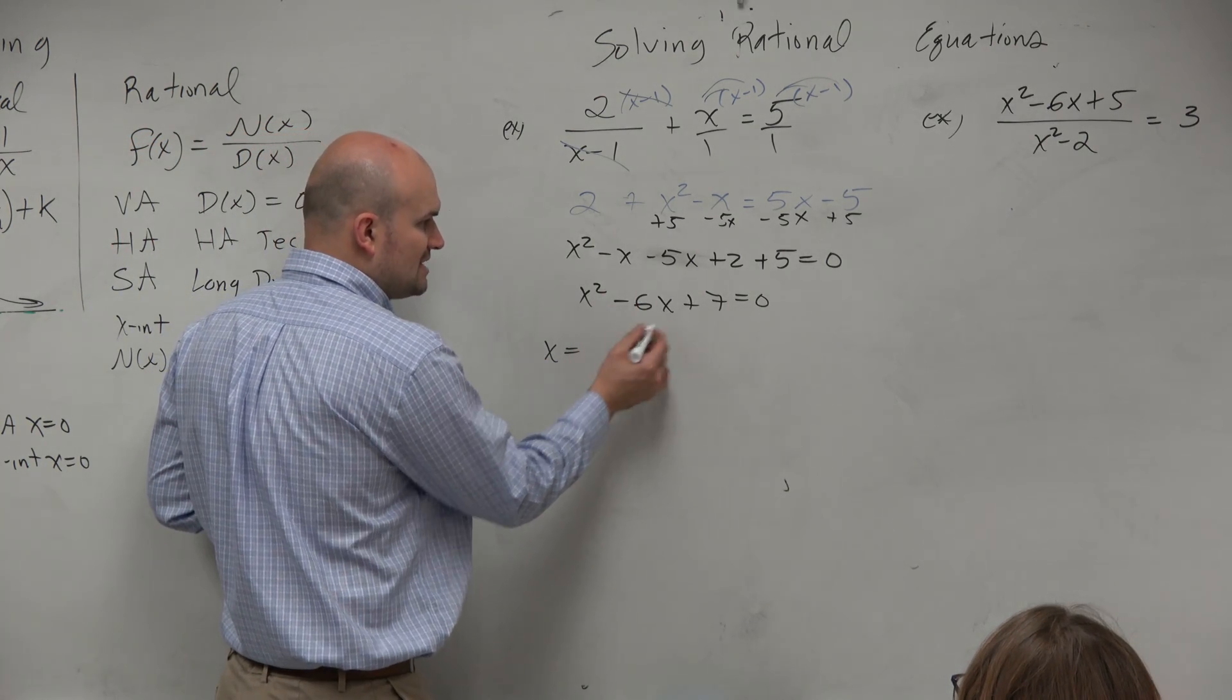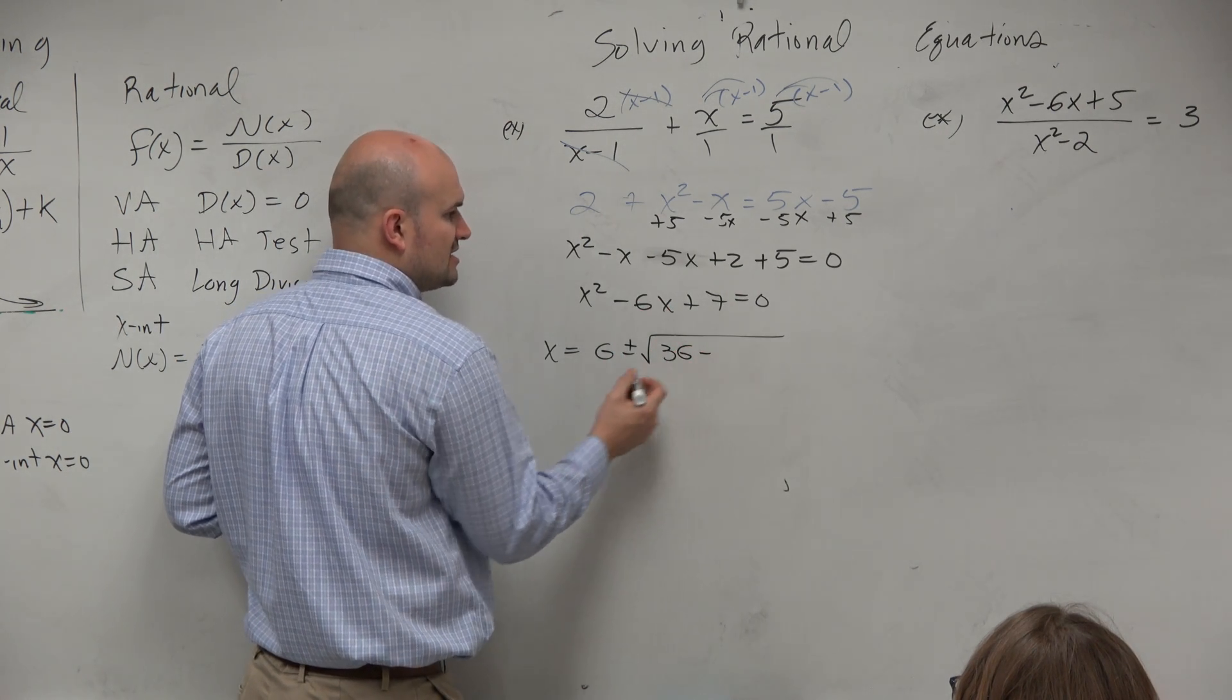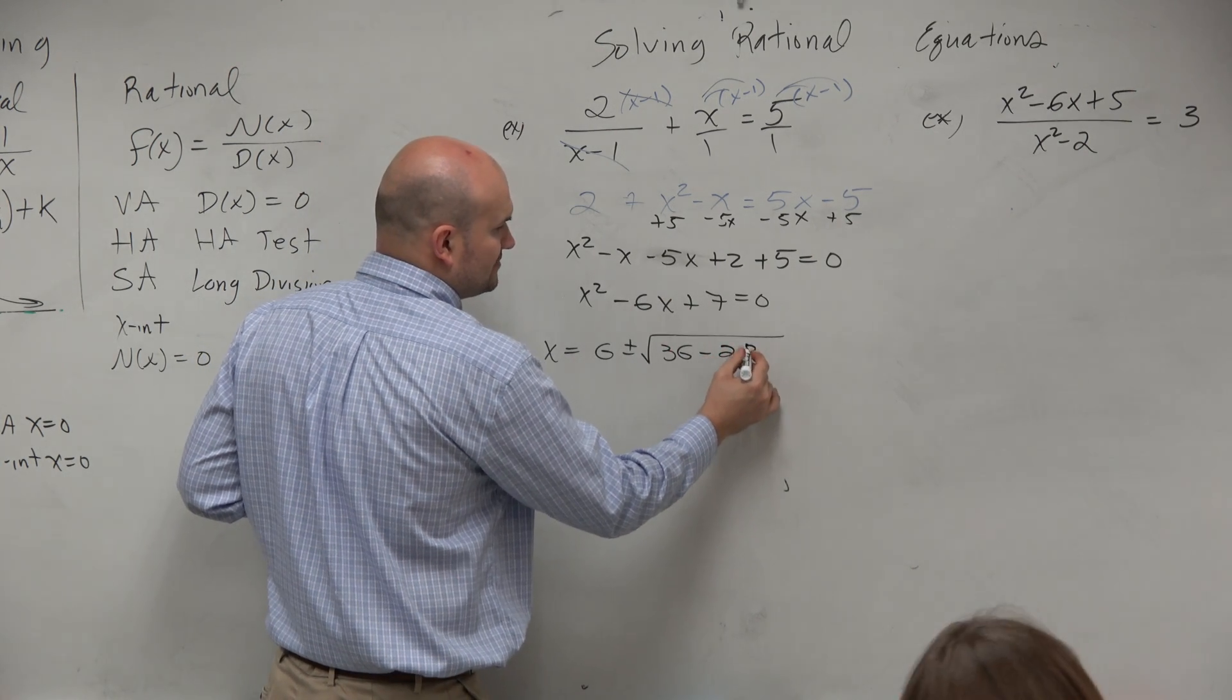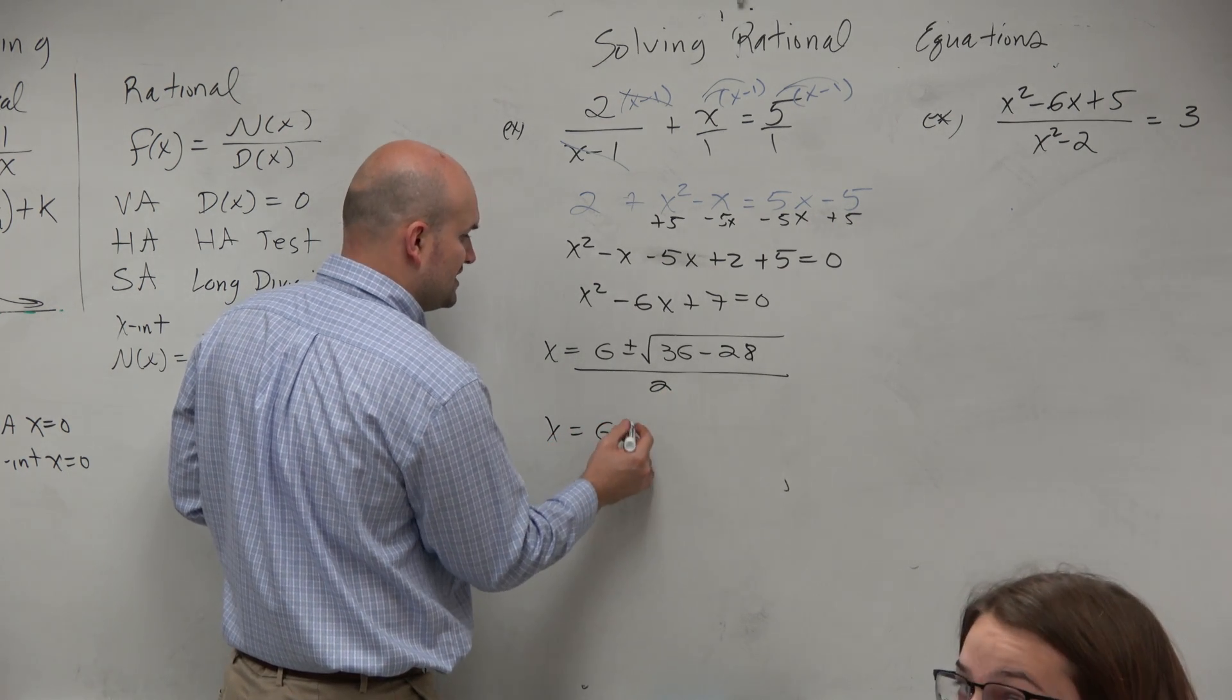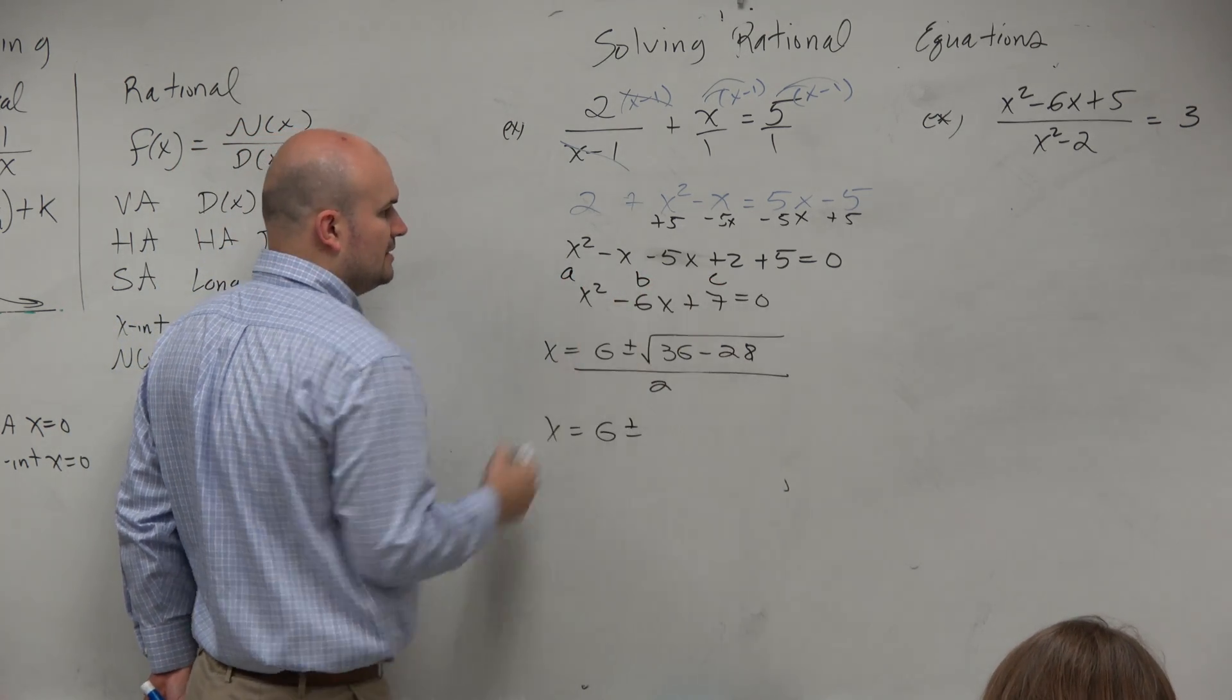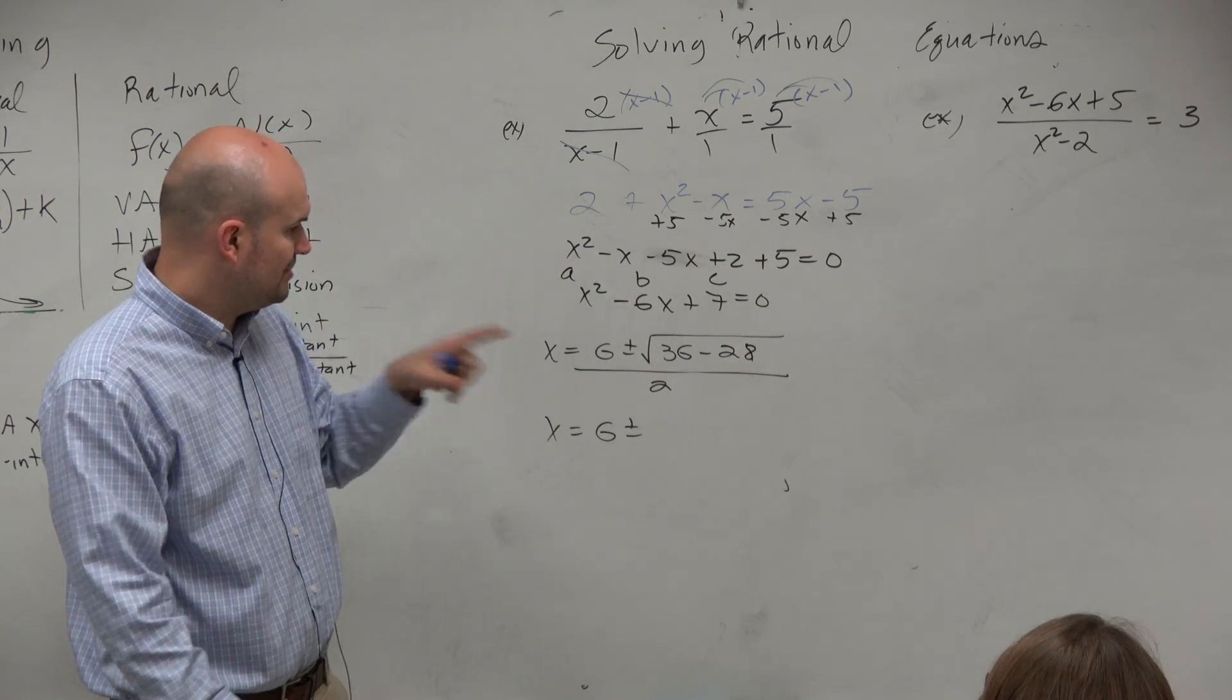So x equals opposite of b, which is 6, plus or minus the square root of b squared, which is 36, minus 4 times a times c, which is going to be 28. Again, I'm going to do this a little bit quicker. Divided by 2 times 1, which is 2. a is 1, b squared minus 4 times a times c. I'm just not writing out the quadratic formula, but I can show you.